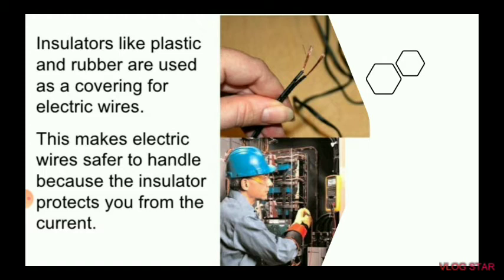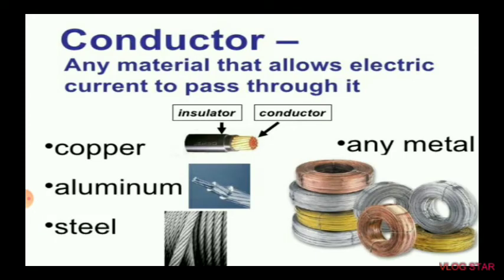Conductors are any material that allows electric current to pass through. Copper is a conductor, steel is a conductor — in fact, all metals are conductors. The outer side of a wire has plastic or rubber, which is an insulator, and inside there is a copper wire that allows the electricity to pass.